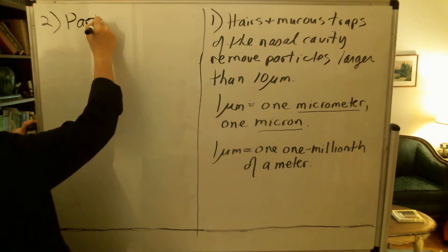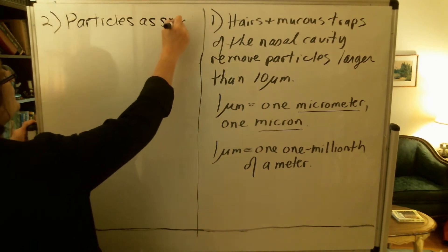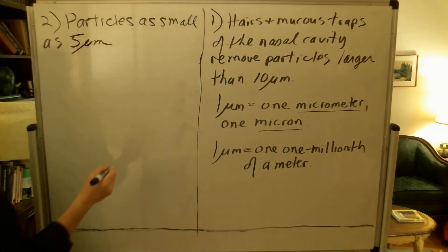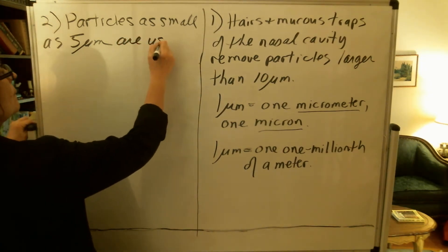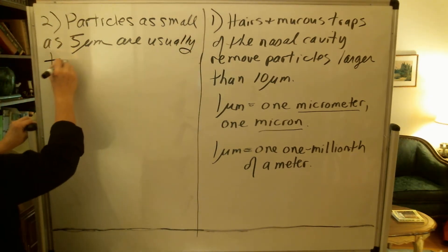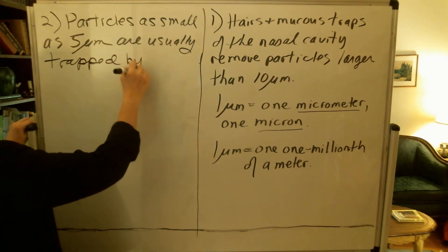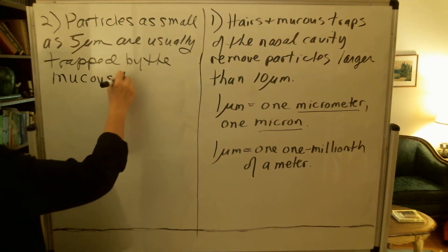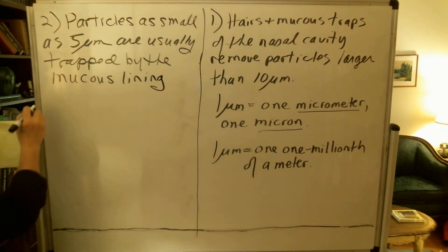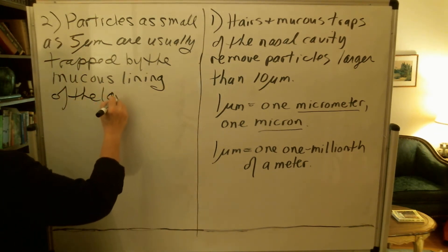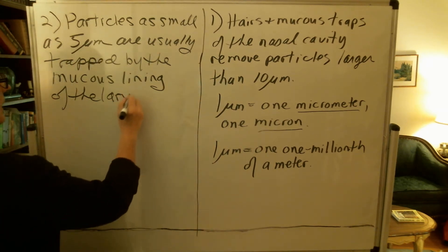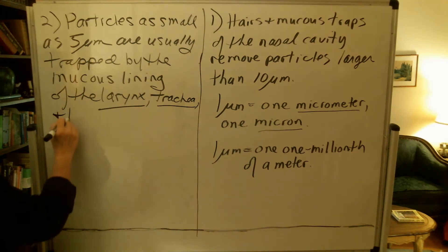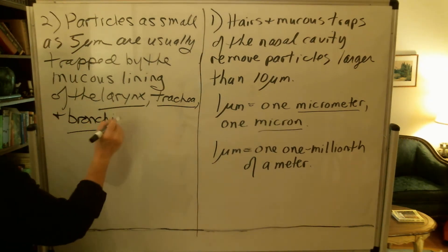Then we have particles as small as five microns that are usually trapped by the mucus lining of the larynx, trachea, and bronchi.